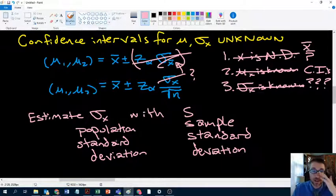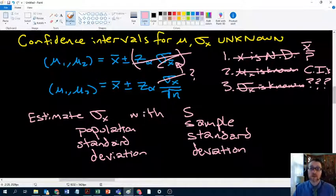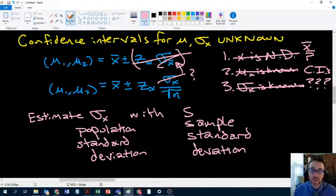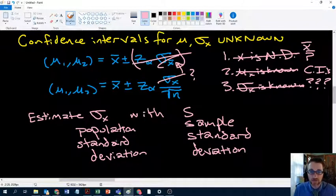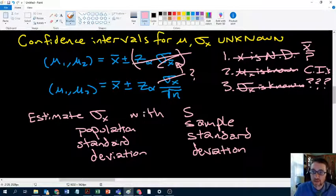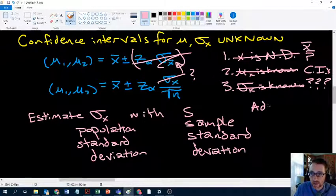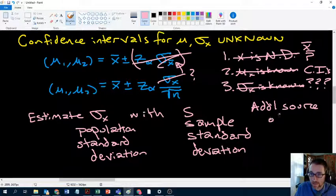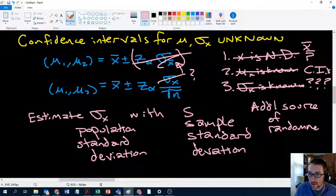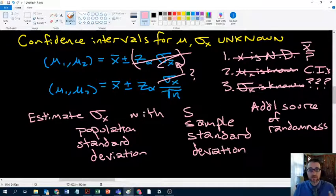Now because this is a sample standard deviation, it's a random variable. There is only one population standard deviation because the population contains everybody, so there's only one group that contains everybody. Whereas samples, there are lots of them. So when we collect a sample and find a sample standard deviation, that is just one of many possible standard deviations we could have calculated from our group. Which means that this is an additional source of noise, of randomness.